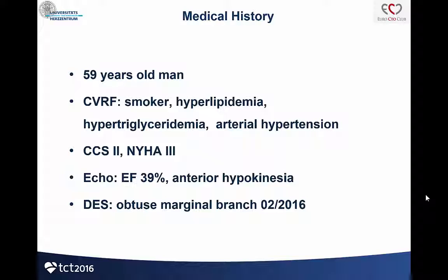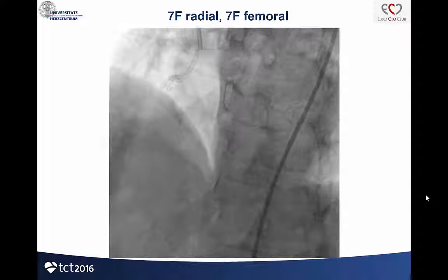I also presented this at TCT in 2016. It was a 59-year-old man, smoker, hyperlipidemia, hypertriglyceridemia, arterial hypertension — normal risk factors — CCS 2. The ejection fraction was 39%. He had anterior hypokinesia and had a drug-eluting stent in the obtuse marginal branch the same year.